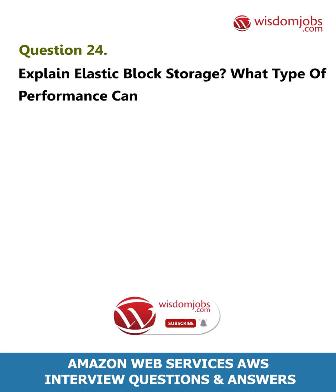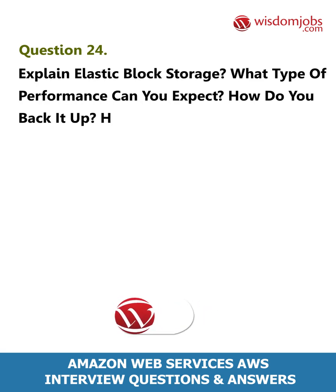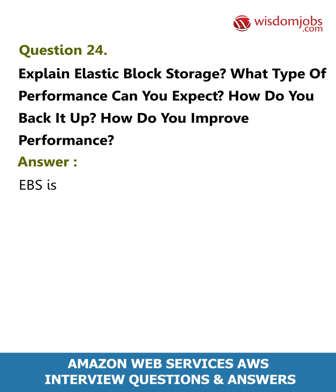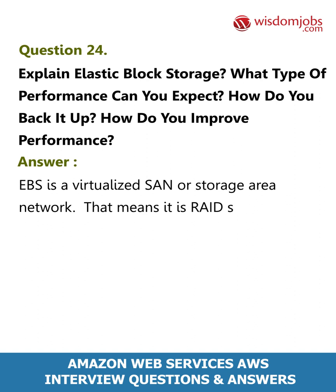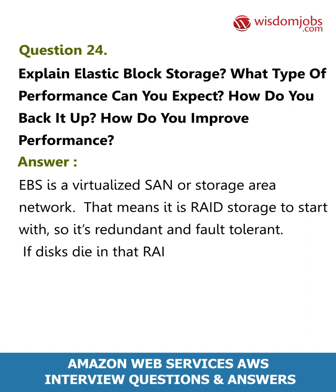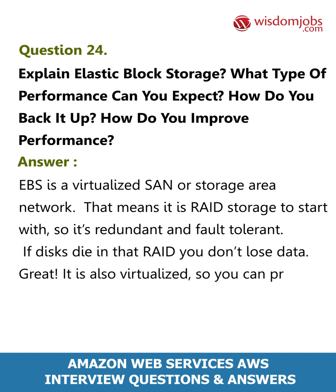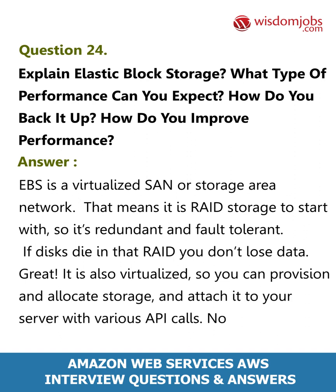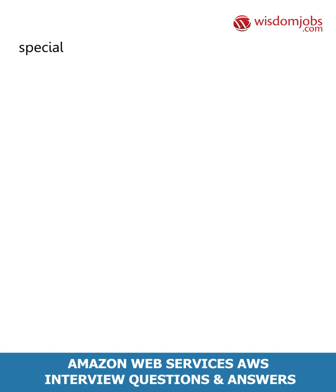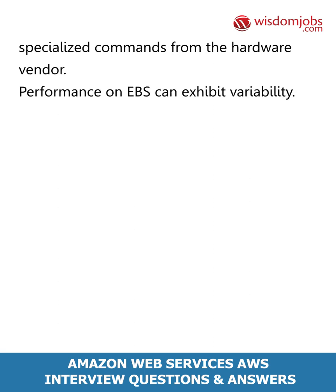Question 24: Explain Elastic Block Storage — what type of performance can you expect, how do you back it up, how do you improve performance? Answer: EBS is a virtualized SAN (Storage Area Network), meaning it is RAID storage to start with, so it's redundant and fault tolerant — if disks die in that RAID you don't lose data. It is also virtualized so you can provision, allocate storage, and attach it to your server with API calls, with no need to call a storage expert to run specialized hardware vendor commands.